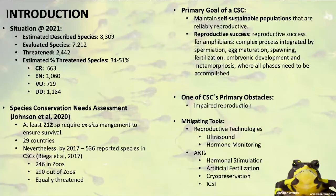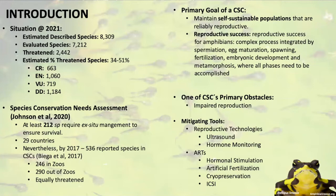As of 2021, we have an estimated 8,309 described species of amphibians. From those, 7,212 have been evaluated and 2,442 are threatened, giving an estimated percentage of threatened species between 34 to 51 percent. This range exists because we have 1,184 data-deficient species, so we don't exactly know where they stand.